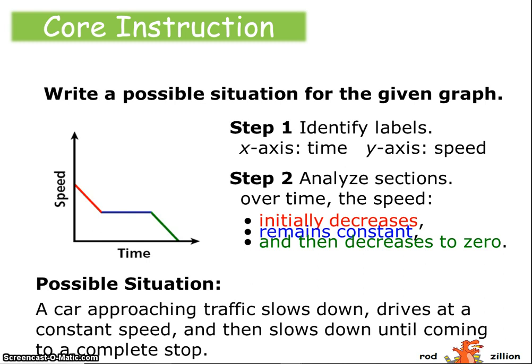The car approaching traffic slows down, drives at a constant speed, and then slows down until coming to a complete stop. Or perhaps even went to a school zone: traveling, slows down, then travels at a constant speed, and then travels further, slowing down until it finally stops.